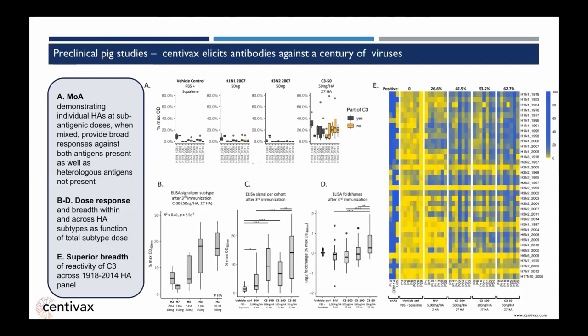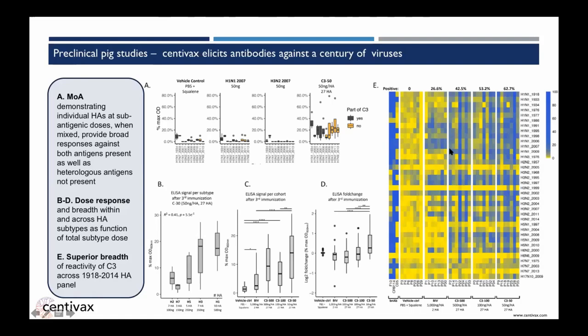Section E stunningly shows the effect of combining a mixture of hemagglutinins using the C3 — concentration-conservation coupling — method versus bivalent and vehicle controls. Blue indicates stronger reactivity; pigs are shown on the x-axis, a century of hemagglutinin on the y-axis. As we lowered the dose of our C3 technology, we get a more and more broad and powerful response against almost everything tested. It was a Friday evening in the lab when we got that first round of data back — pretty exciting because we'd worked for months without knowing whether the method was successful. This was our first proof positive, and it was a good day.